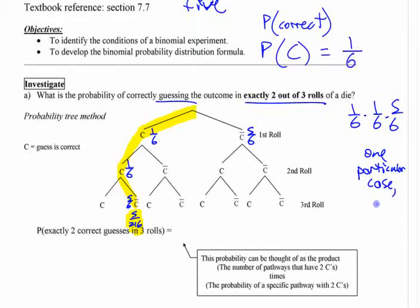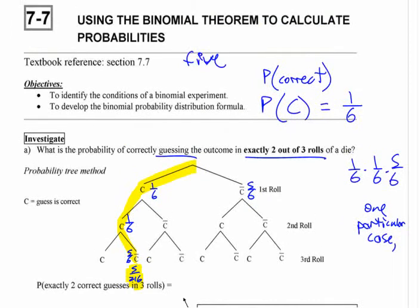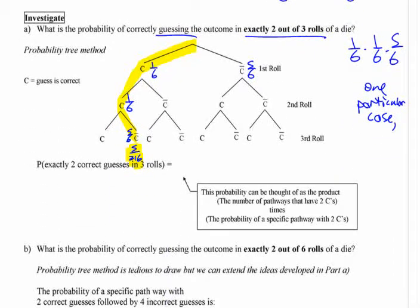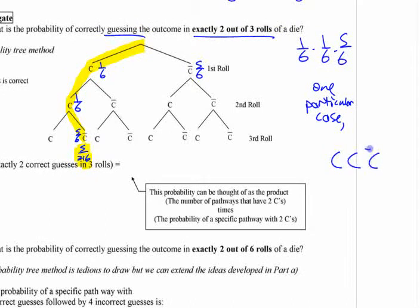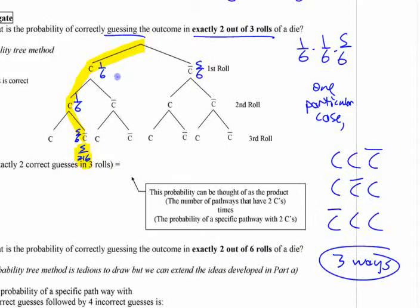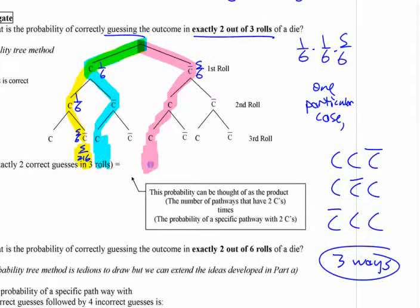That's not the only pathway. You have to think about how many different ways you can get exactly two correct. There are three different ways: you can get correct, correct, then wrong; or correct, wrong, then correct; or wrong first and then the last two correct. There are three ways this can happen. So the other two ways are: get the first correct, then incorrect, then correct; or get the first one incorrect and then get the last two correct.